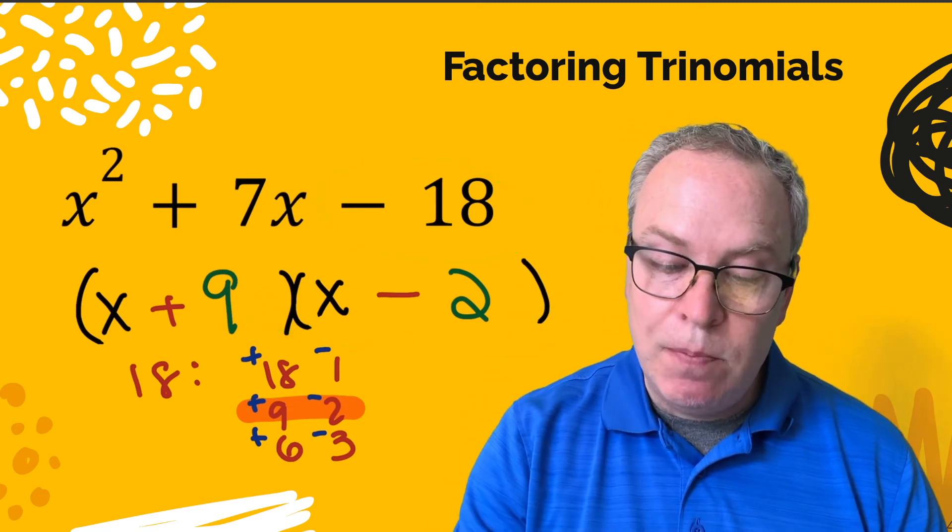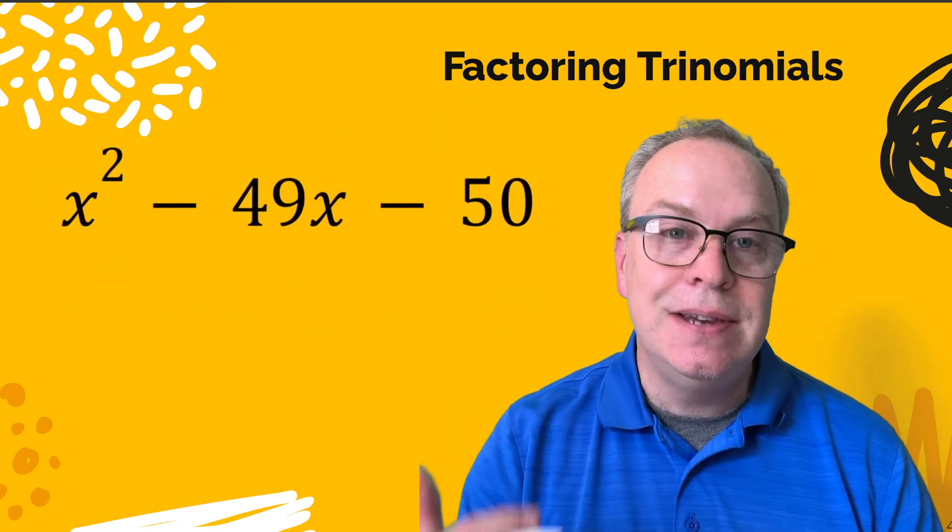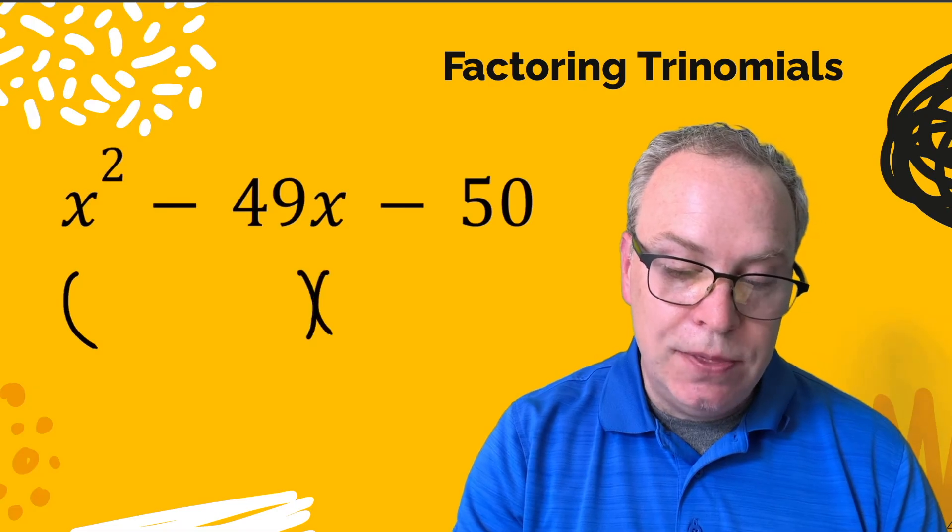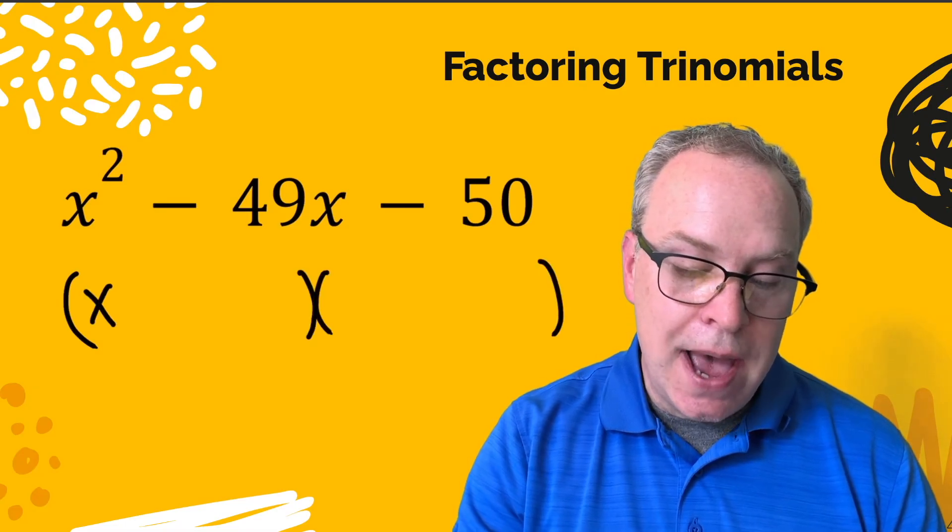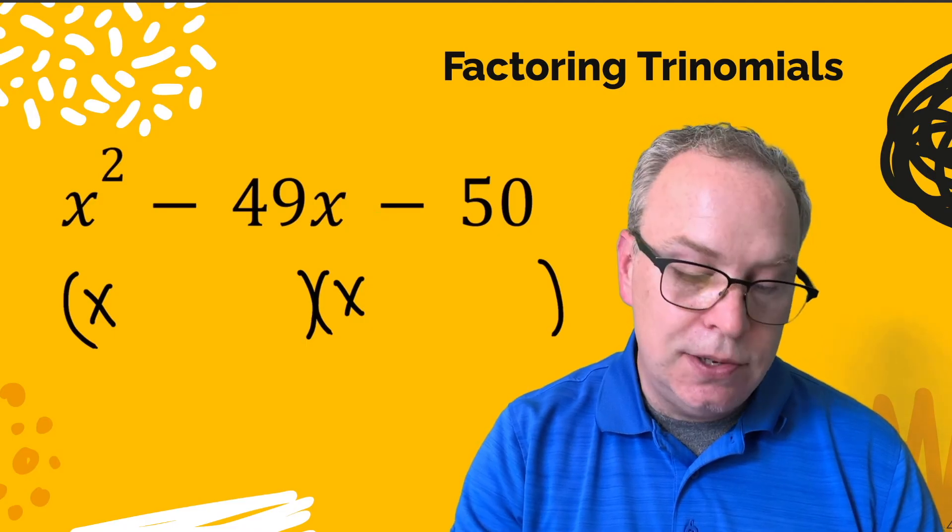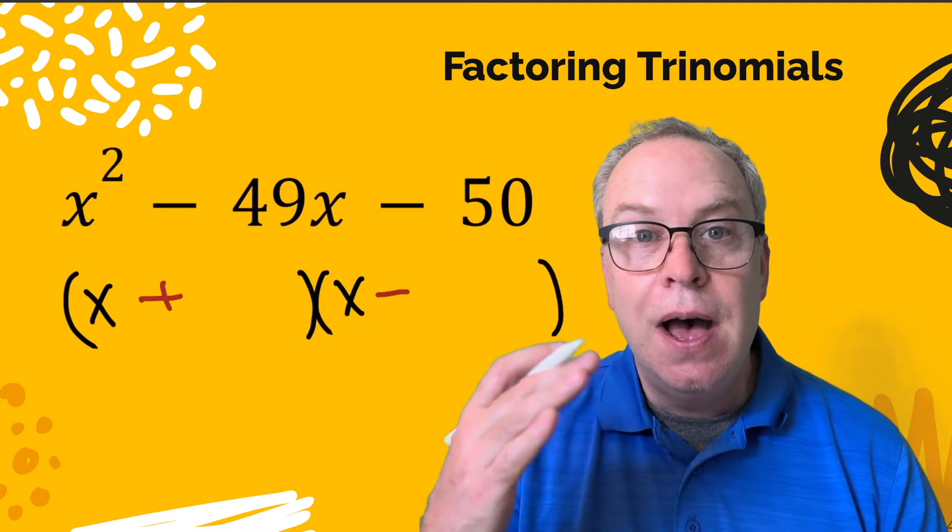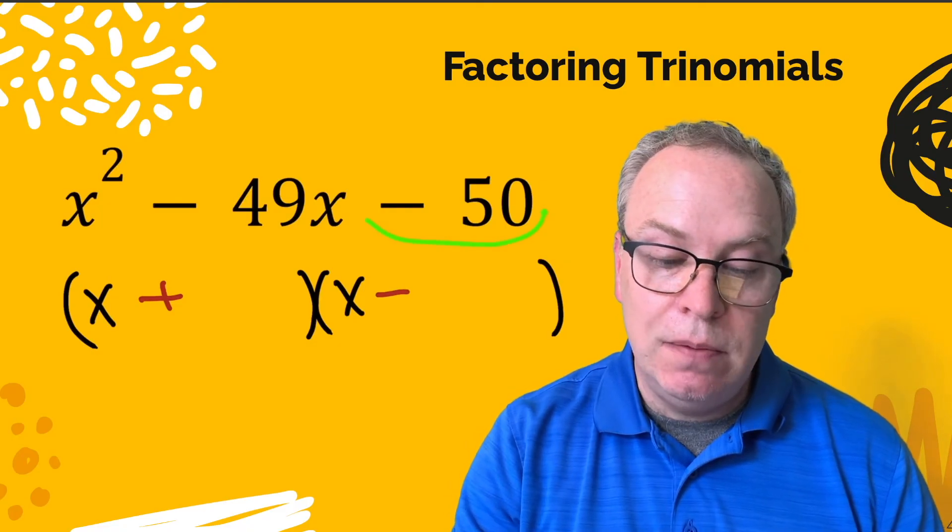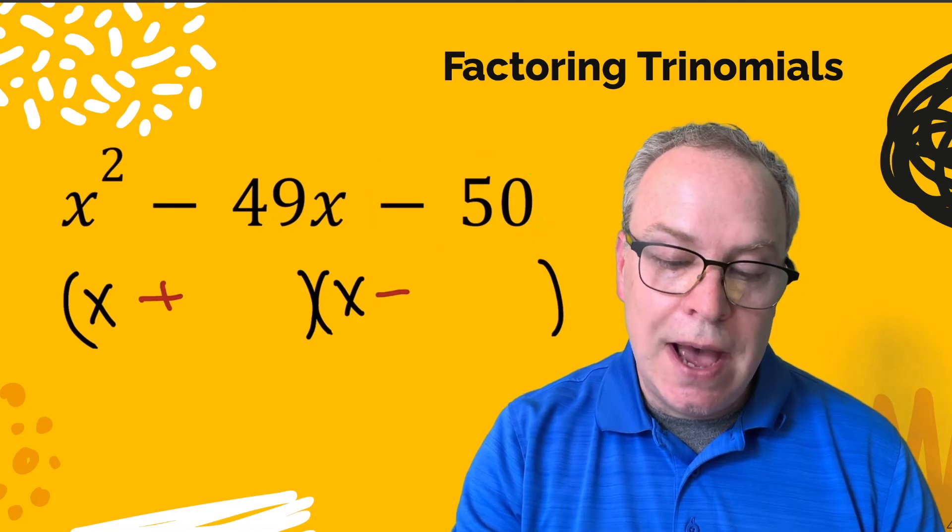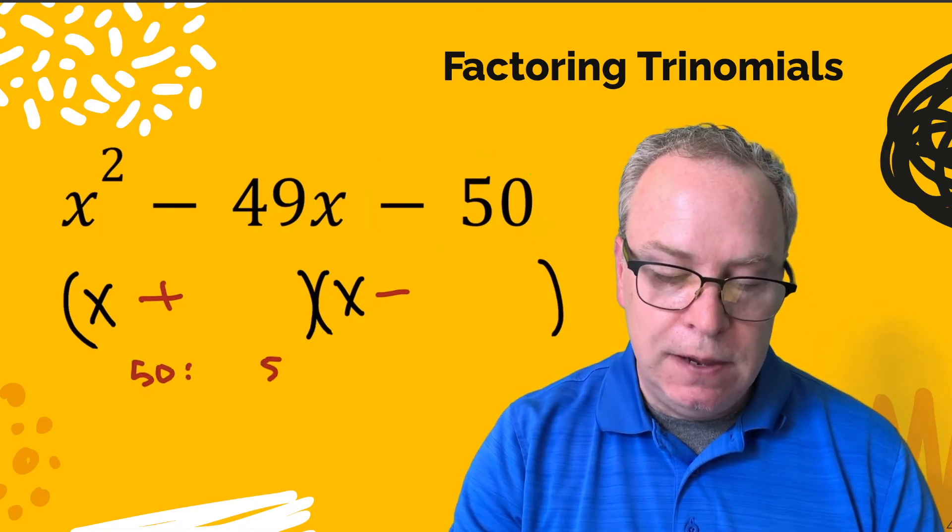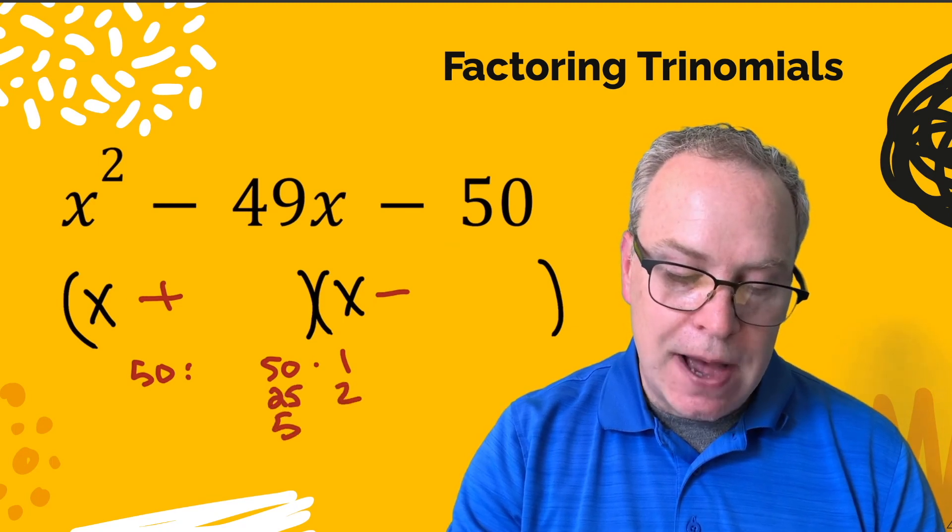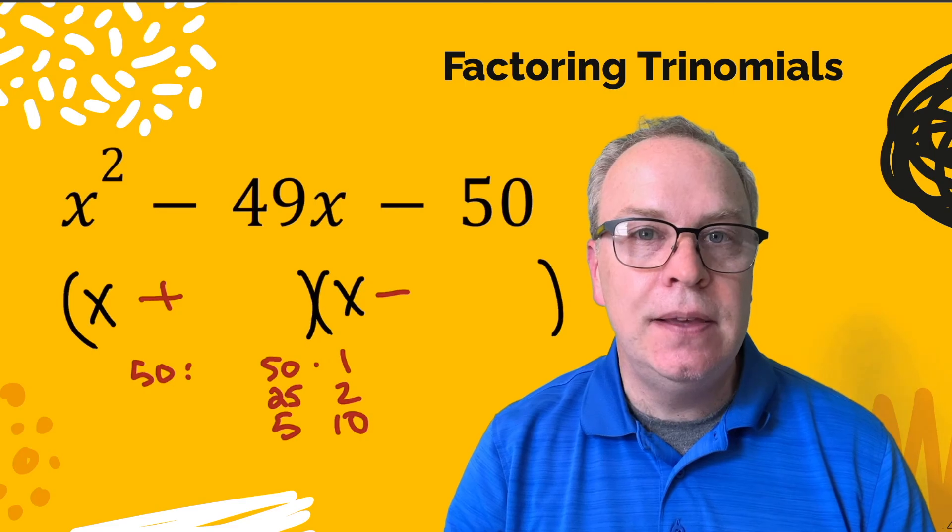Okay, I have one more example where everything is negative here. The middle term and the last. So we put our parentheses. We put our x and our x. Same deal as last time. We've got to have 1 plus and 1 minus because a positive times a negative is the only way we're going to make a negative through multiplication. So now let's tear that 50 apart. How do we make 50? 50 times 1, 25 times 2, 5 times 10. And I think that's it.